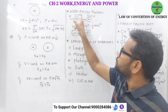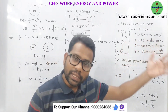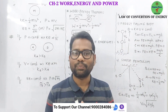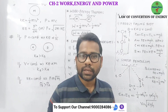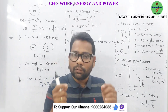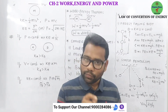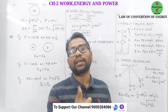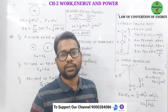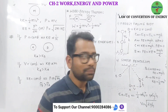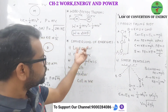Work-Energy Theorem: if a body initially moves with velocity u and a force acts on it in the direction of motion, its velocity increases and work is done. This work done equals the change in kinetic energy. The work done on a moving body in the direction of motion is always equal to the change in its kinetic energy. If force acts in the opposite direction, kinetic energy decreases. Mathematical form: W = ½mv² − ½mu².